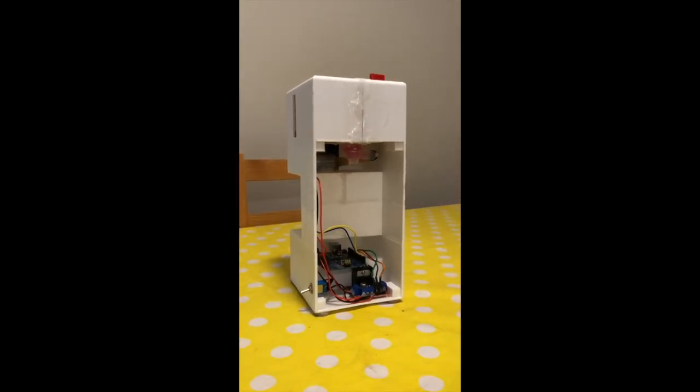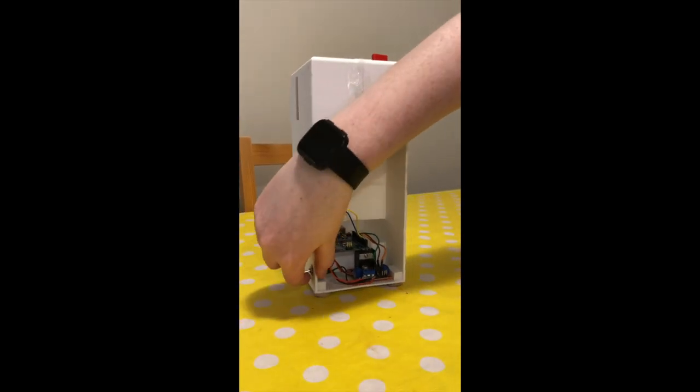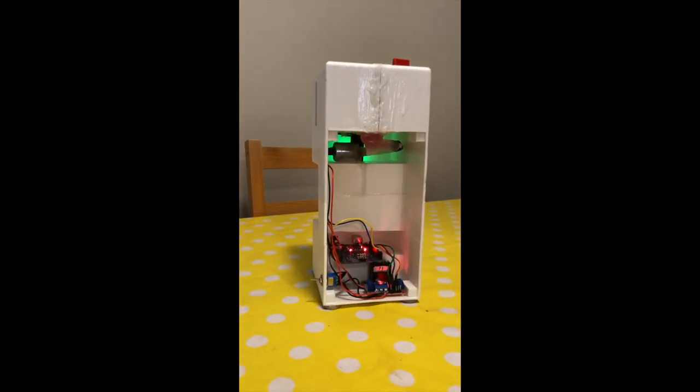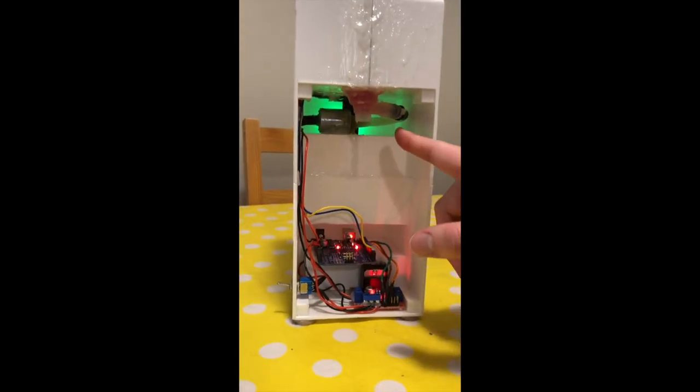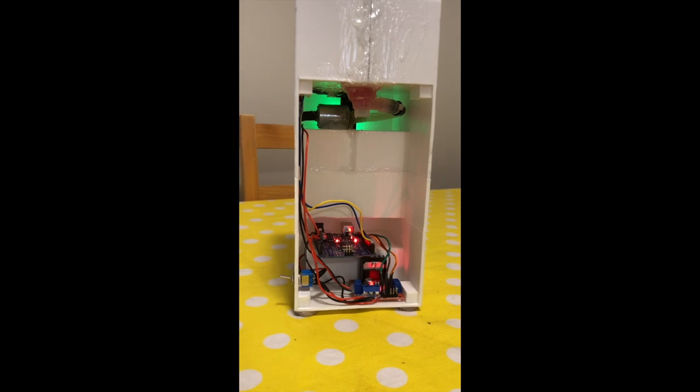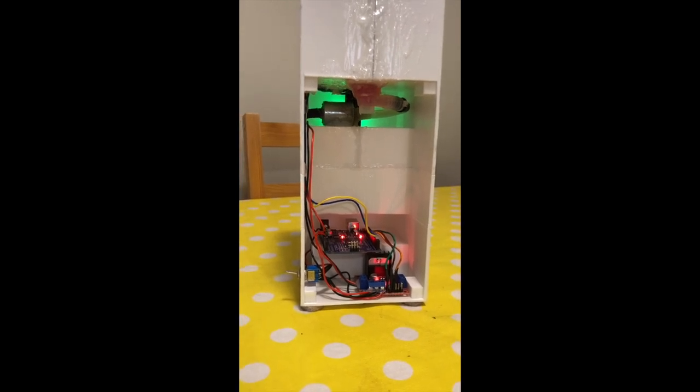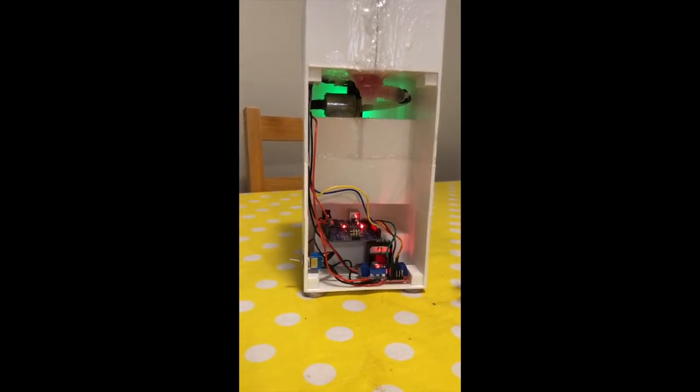The soap dispenser is then powered on using the switch, and you can see the LEDs turn on as well as the indicator light for the sensor. This shows us that everything is working properly and everything has enough power.